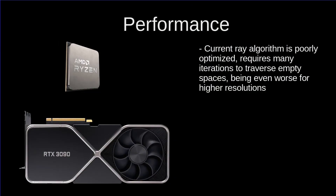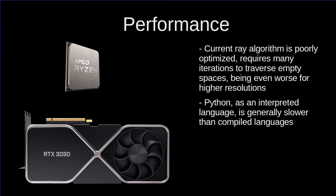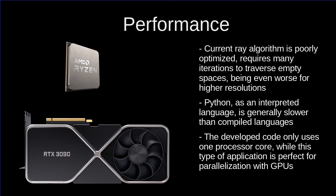There are three main points to discuss. First, the algorithm we are using is very poorly optimized — the ray needs many small increments to cross the empty space on the map, and the situation is worse at higher resolutions where the increments must also be smaller to avoid passing straight through block corners. Second, Python itself is an interpreted language, not known for its speed — compiled languages are generally significantly faster. Third, the code is only using one core of the processor, but this type of application is ideal for parallelization, which is why video cards are used to run games.